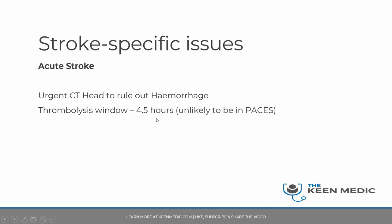The thrombolysis window is four and a half hours, which is the current UK guideline. In a PACES exam you may get a patient whose symptoms started two hours ago — you need to think about thrombolysis, get an urgent CT head, and if you are not the stroke team, put out an urgent thrombolysis stroke call. If you're not in hospital, the patient needs to be in an ambulance straight to A&E.